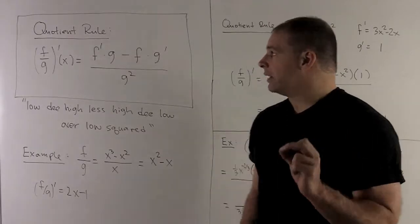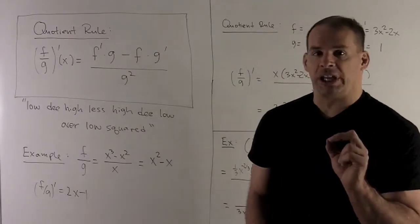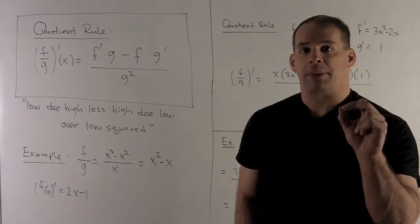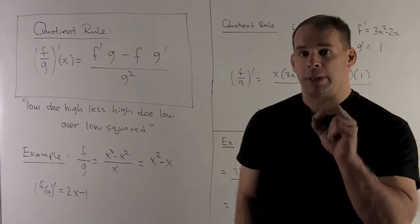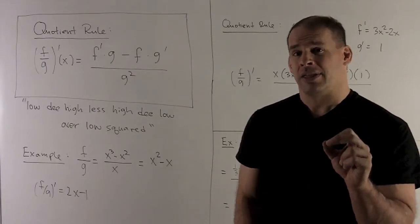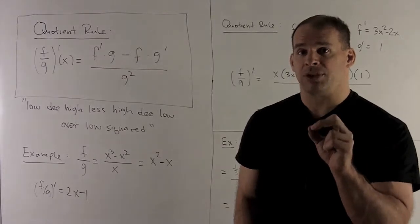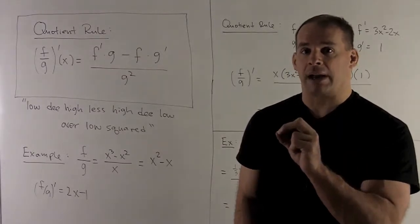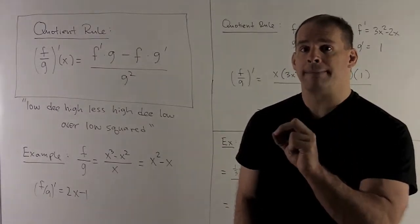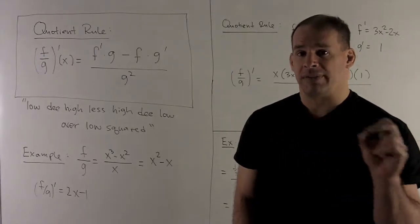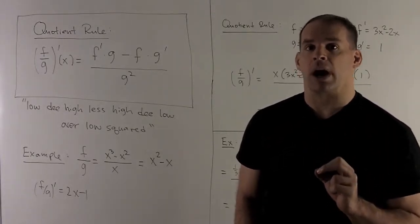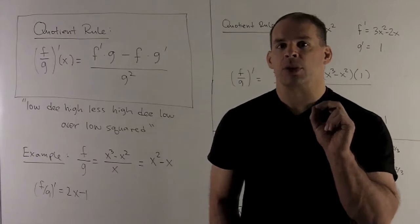If I have f over g and I take the derivative, I take the derivative of the top and multiply it by the bottom: that's f prime times g. Then I subtract off f times the derivative of the bottom, which is f times g prime. Then I divide everything by the bottom squared, g squared.